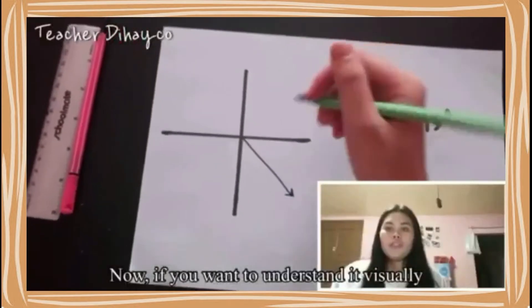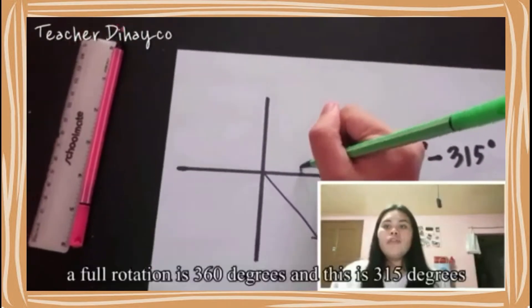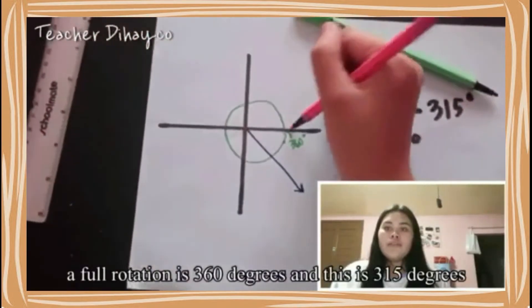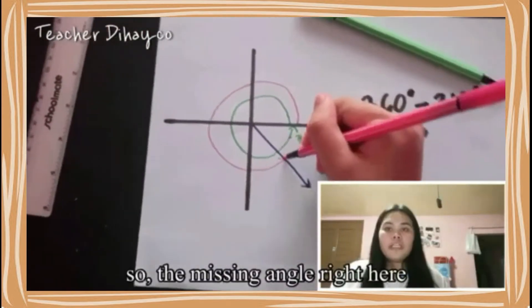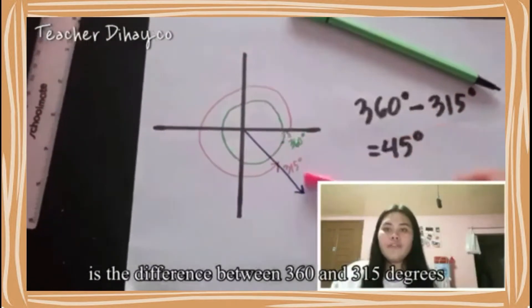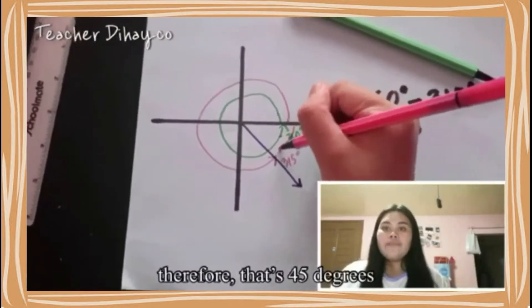If you want to understand it visually, a full rotation is 360 and this is 315. The missing angle right here is the difference between 360 and 315. Therefore, that's 45 degrees.